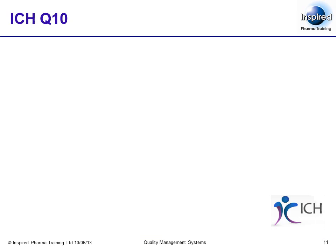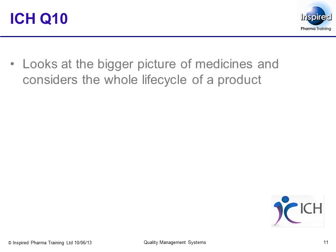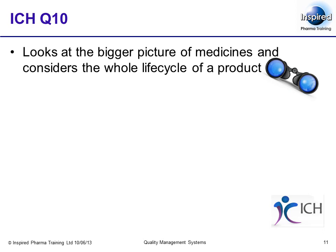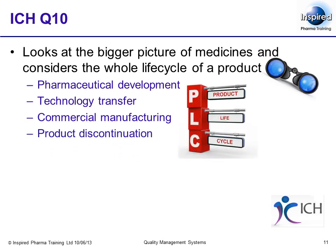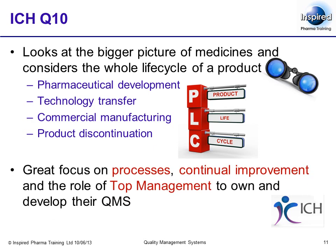If you have not already read the ICH Q10 document, it will be worthwhile having a look at it. It tries to look at the bigger picture of medicines and considers the whole life cycle of a product from pharmaceutical development, technology transfer, commercial manufacturing and eventual product discontinuation. Like the FDA's quality system model, it has a great focus on processes, continual improvement and the role of top management to own and develop their QMS. From a personal perspective, as the course tutor, I do not feel that ICH Q10 is a well-constructed and easy-to-understand document, whereas the FDA equivalent is much easier to understand.